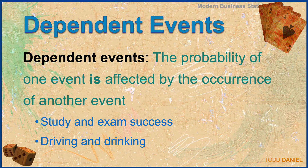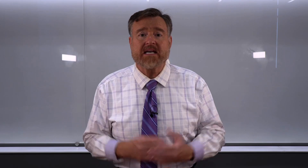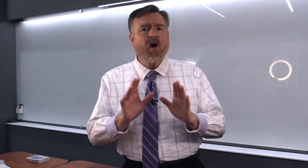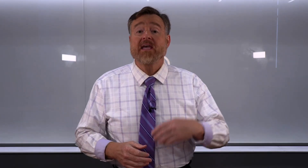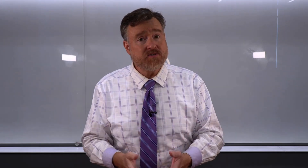Now let's distinguish between independent and dependent events. When events are dependent, the probability of one event is affected by the occurrence of the other event, such as study and exam success. If you go in to take a test and simply guess, you'll get a score — but how much better will your score be if you study? Your success on the exam is dependent upon the amount of time spent studying. Another example might be drinking and driving. Hopefully this is dependent: if you know that you've been drinking, you would choose not to drive, or you make a contingency plan so that you don't have to drive.